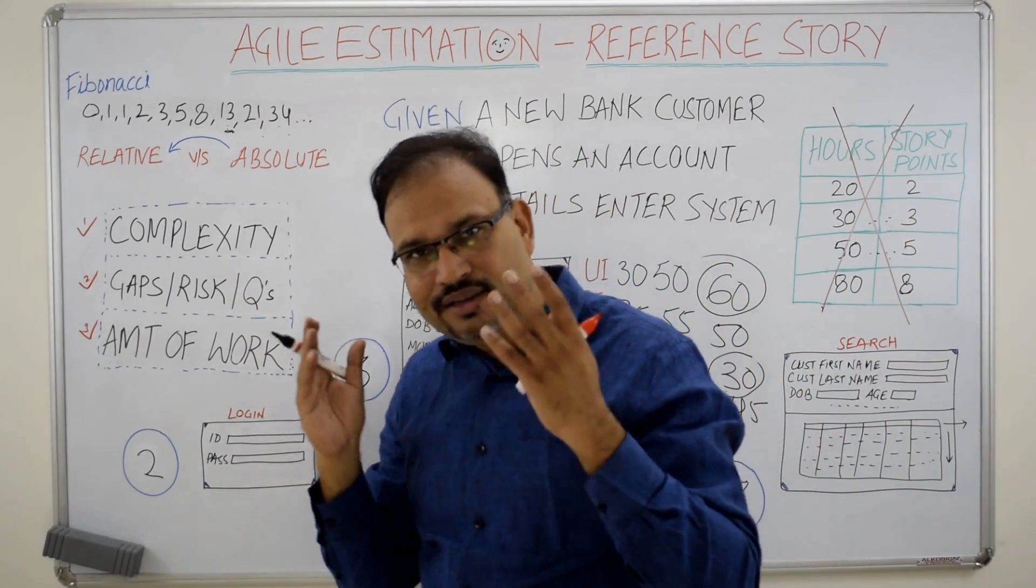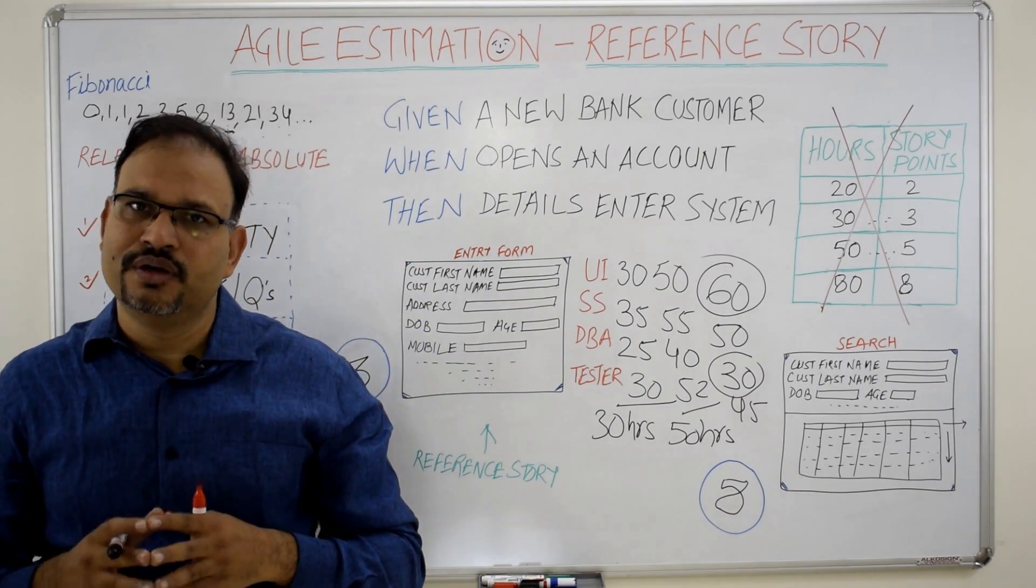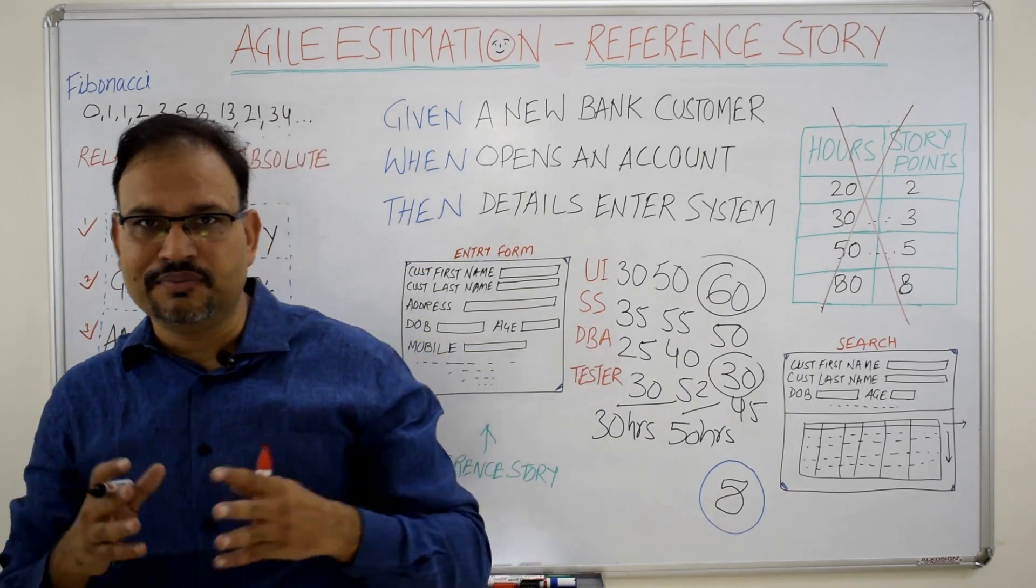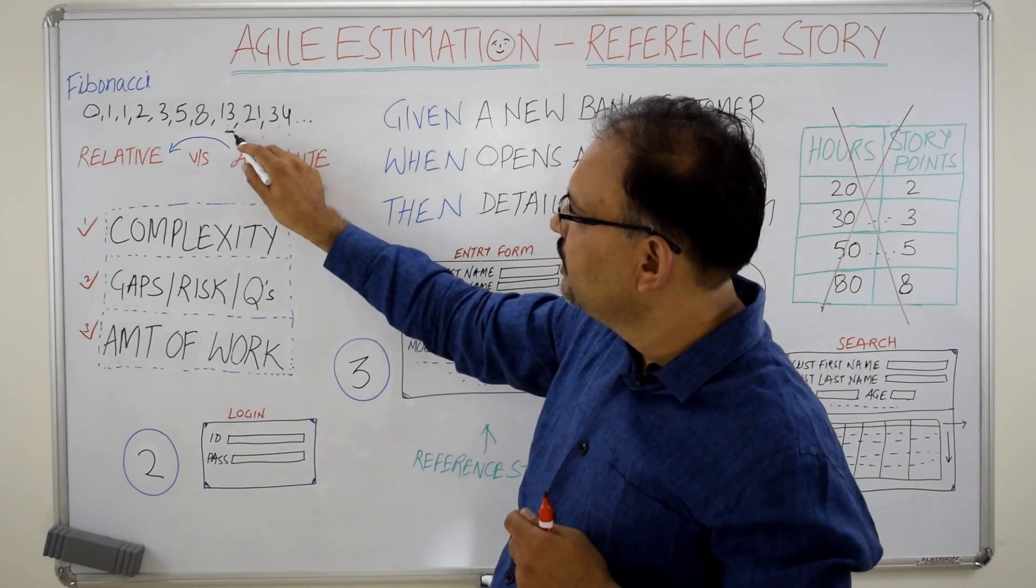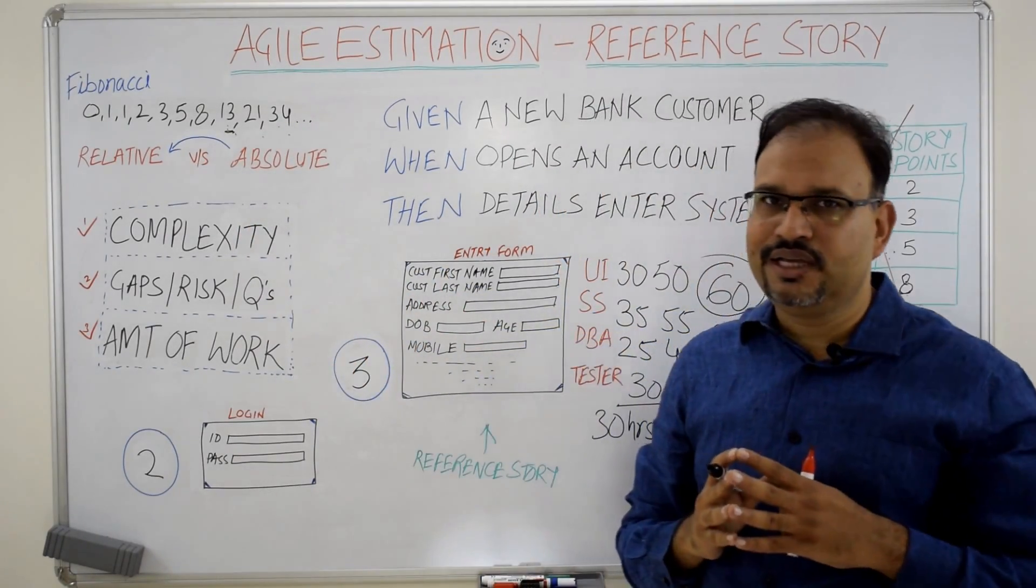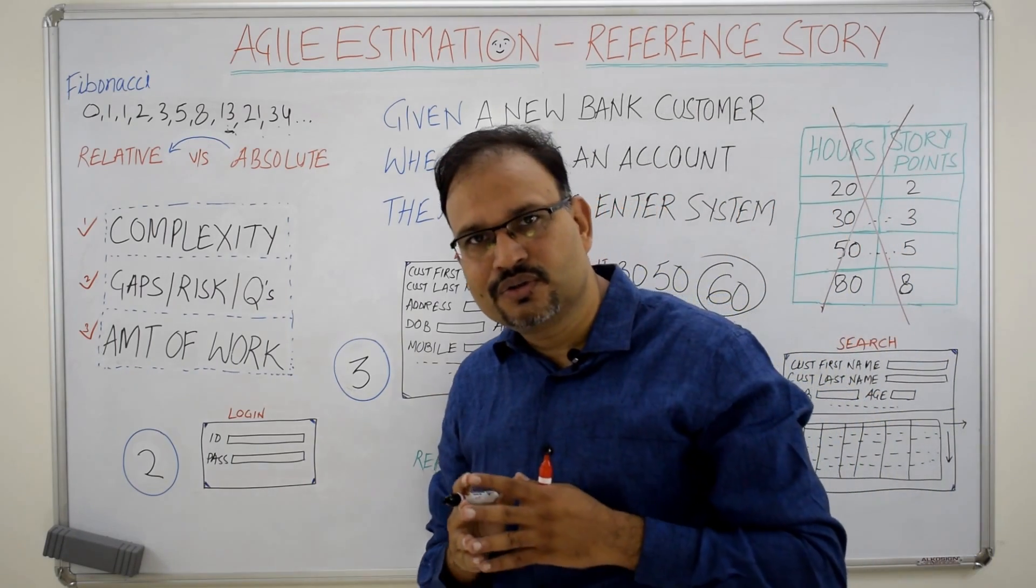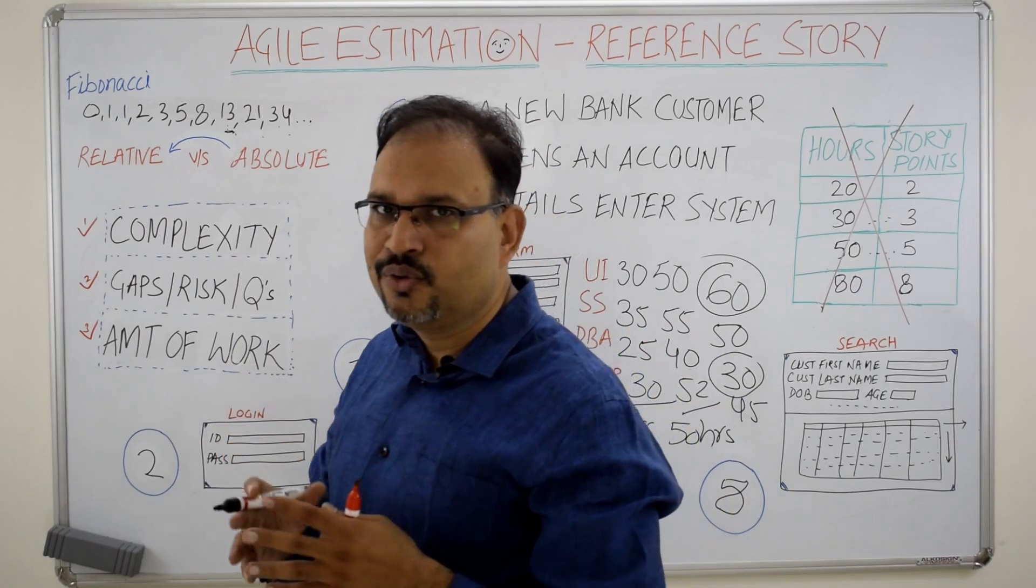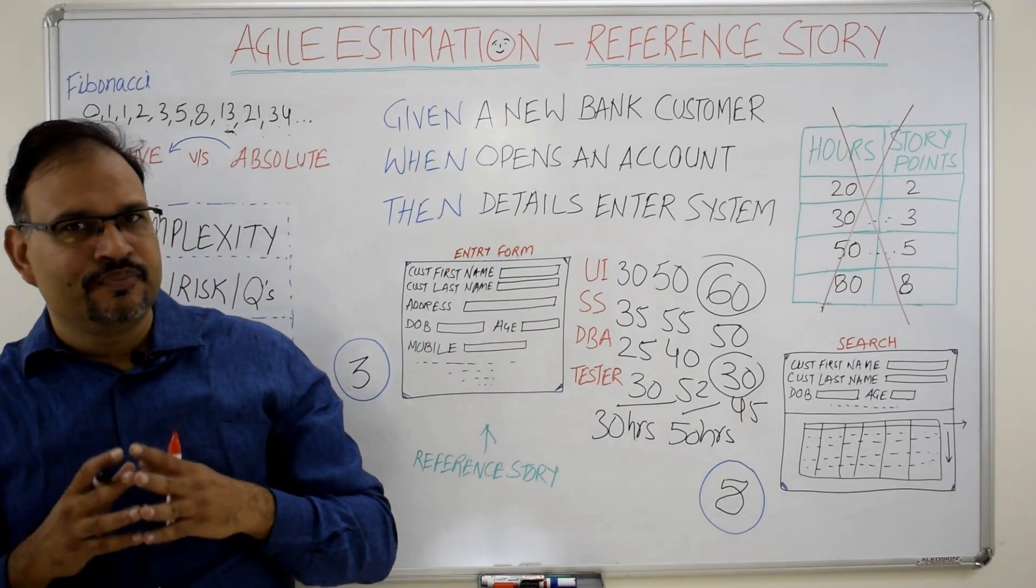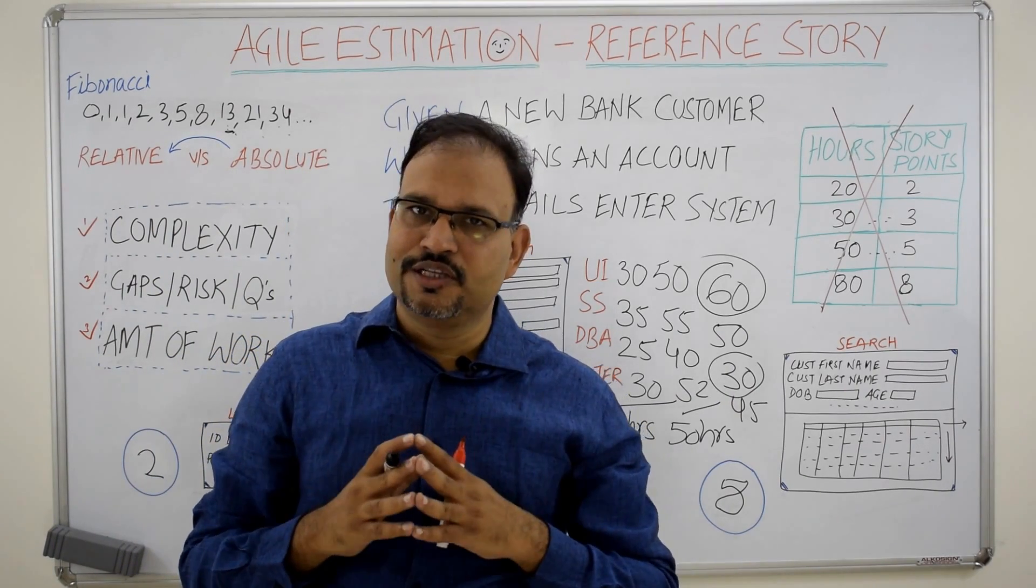But team need to understand that these stories are epic stories which need to be broken down into smaller stories. Even in some cases, a story point of 13 may be on the higher side and team may think that this story cannot be delivered in the sprint. In that case, they need to talk to the scrum master and agile coach to find some splitting technique so that this story can be broken down into smaller stories and can be delivered in the sprint.